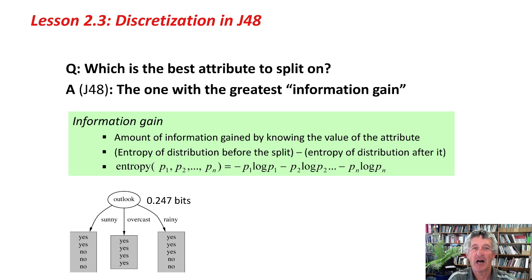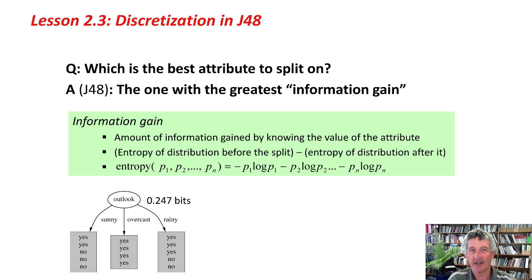The key questions are: what's the best attribute to split on, and when should you stop the process? The answer to the first question is the attribute with the greatest information gain — at least that's J48's answer. Information gain is the amount of information gained by knowing the value of the attribute, which is the entropy of the distribution before the split minus the entropy after it. Entropy is defined in terms of P log P. In the weather data example, the information gain for Outlook was 0.247 bits, which was the greatest of all attributes, so that's the one that was split on.